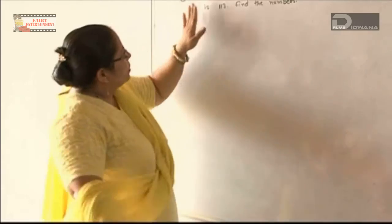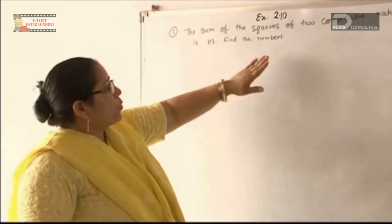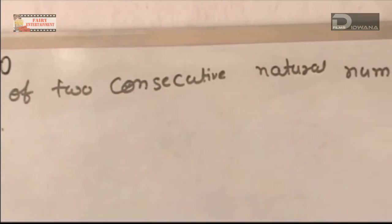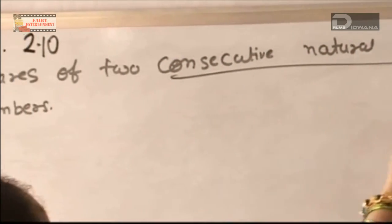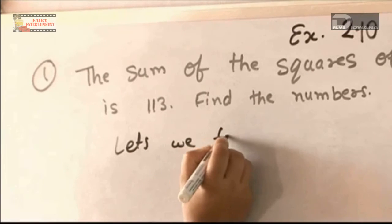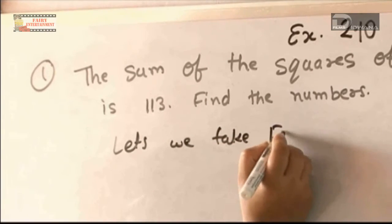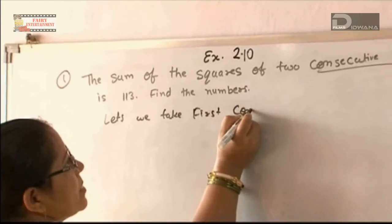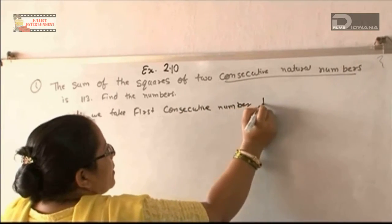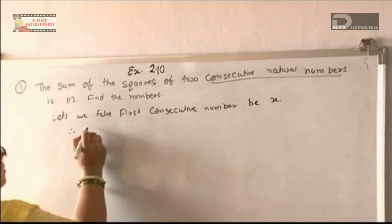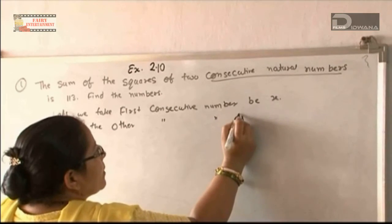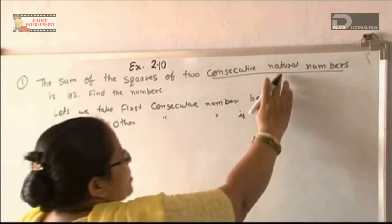Question number 1: the sum of the squares of 2 consecutive natural numbers is 130. Find the numbers. Consecutive natural numbers are like 1, 2, 3, 4. Let's take the first consecutive number as x, therefore the other consecutive number is x plus 1, because for natural numbers the difference is 1 only.